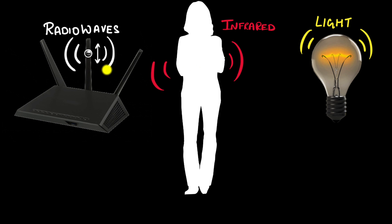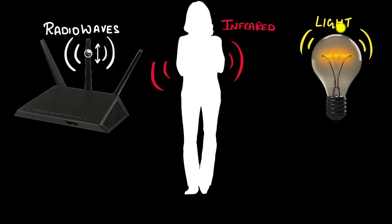Why do different objects emit different kinds of electromagnetic waves? Because the charges are oscillating at different frequencies. In your wi-fi, the charges oscillate at lower frequencies, giving low-frequency electromagnetic waves called radio waves. Inside our bodies, charges vibrate at slightly higher frequencies giving infrared rays. Inside a light bulb, even higher frequencies give visible light.